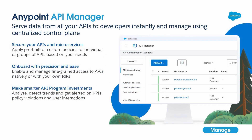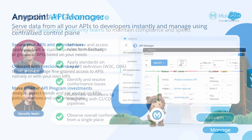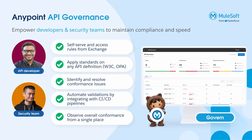Anypoint API Manager provides a centralized web-based control plane to securely manage all your APIs and microservices no matter where they're deployed. Anypoint API Governance helps organizations ensure that their APIs achieve consistent quality and conform to internal governance standards and industry regulations.